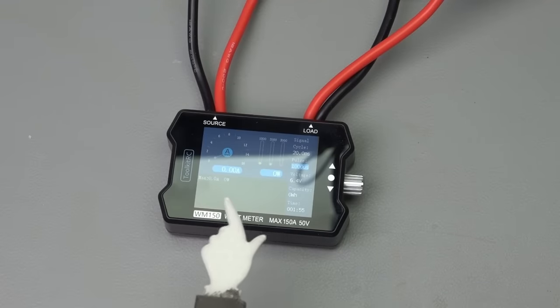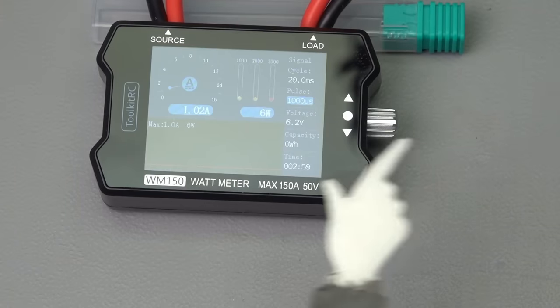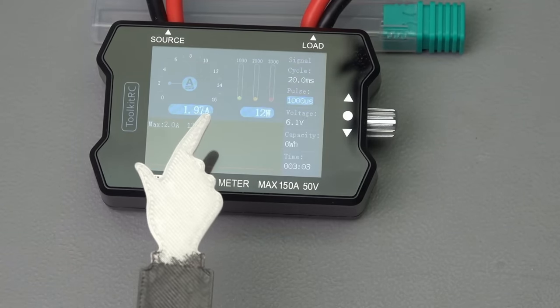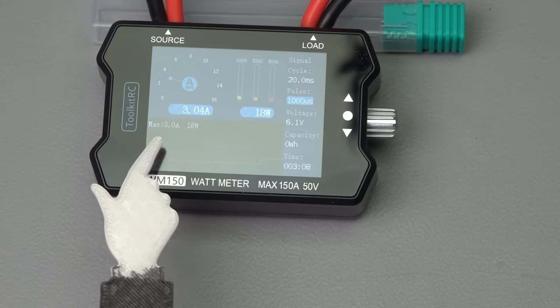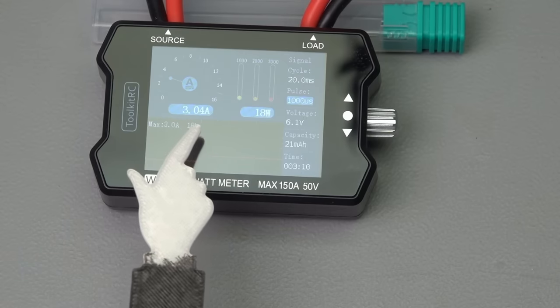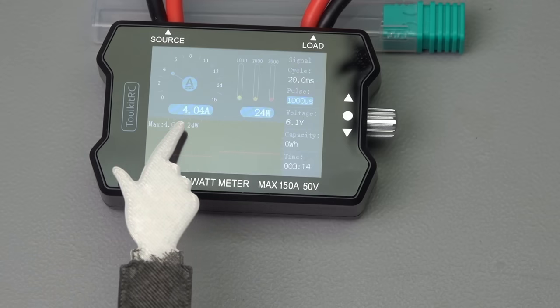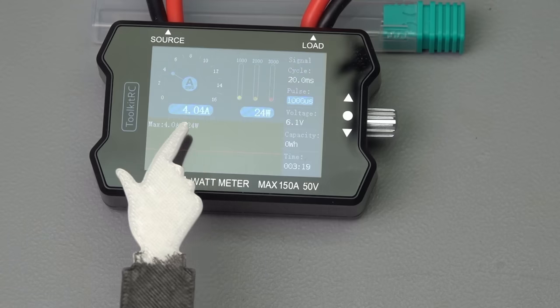And I connected it to the load, also 6.2V and now we can start the test. My power supply can deliver 6A maximum. I have 1A on my load, it shows 1.02A, which is okay. 2A, 2.02A. 3A, 3.04A. 4A, 4.04A, so quite precise.